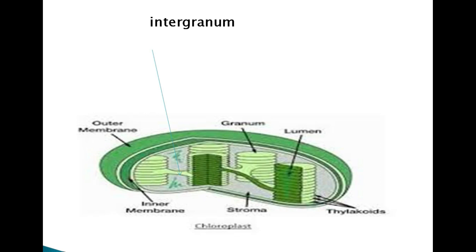The thylakoid membranes are also interconnected by a non-green part which we call intergranal lamellae. You can see it easily — these are the non-green spots connecting the grana.